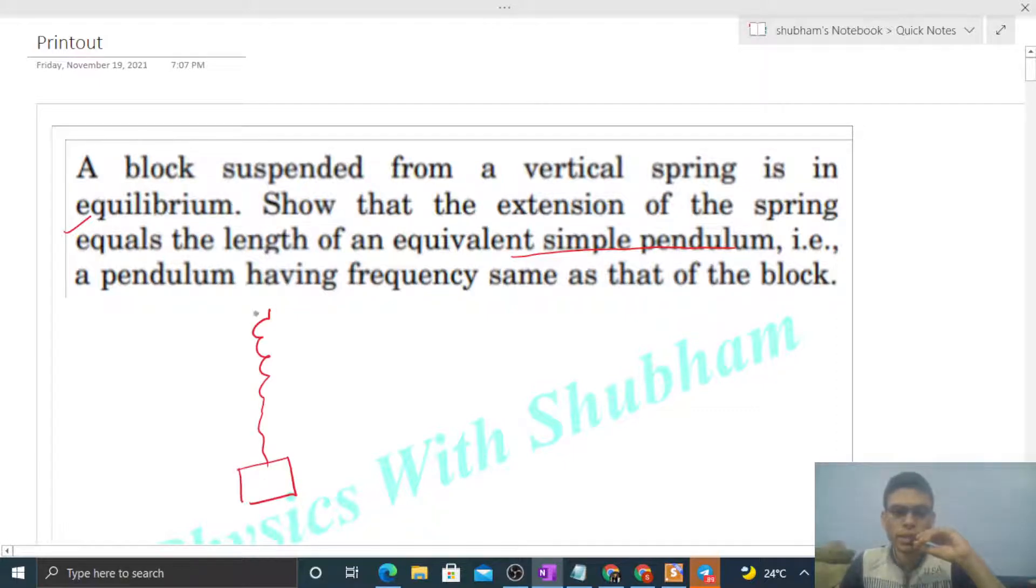So a vertical spring has a block which is in equilibrium. Now this vertical spring has an elongation, let's say x naught. If we draw this block's free body diagram, upward the force is the spring force and downward the force is weight.